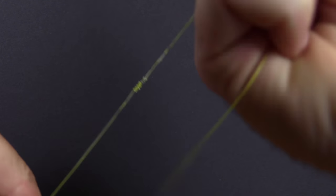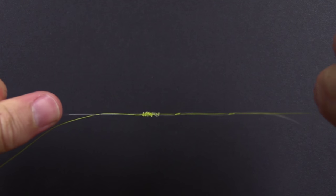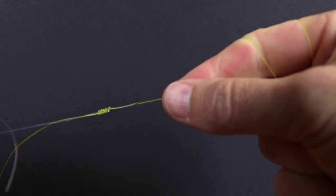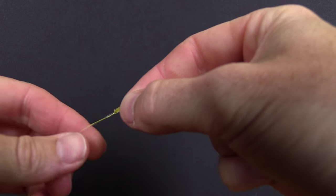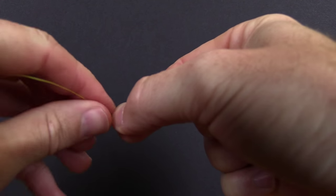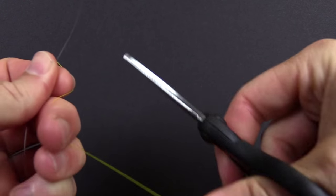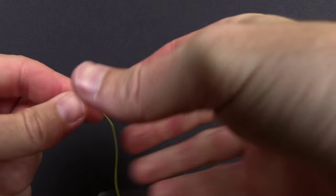Now we can let go of the tag ends and pull just on the main lines, the main braid and the main leader. There's our knot. This knot gets down nice and compact when done properly. Now time to cut the tag ends. Cut the braid, now the tag end for the leader, and there we are.